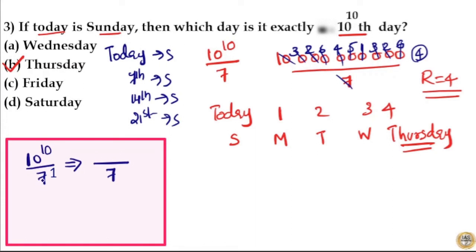Now 10 by 7, we are reducing the numerator to a smaller value. So take remainder of 10 by 7, remainder of 10 by 7 is 3. Now we are reducing the power of 10, power of 10 is 10. Here the denominator is 7. Take 1 less from 7, that is 7 minus 1 is 6.